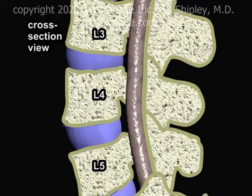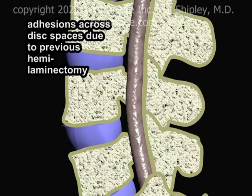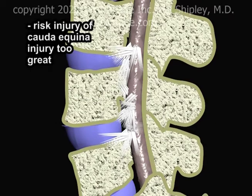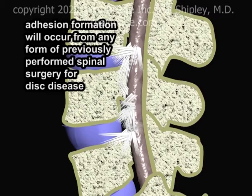As mentioned in Part 3 of this series, the previously performed hemilaminectomy causes adhesions to form between the cauda equina and the disc spaces. The scarring makes it both difficult and dangerous to use a posterior approach when performing spinal surgery to treat multilevel degenerative disc disease. The surgeon's ability to see the cauda equina clearly and keep it out of harm's way is significantly impaired and the risk of neurological injury is too great. In these circumstances, the anterior spinal approach is much preferred for the placement of interbody devices. This type of adhesion formation in and around the spinal canal commonly occurs not only with laminectomy, but also with virtually any form of previously performed spinal surgery used to treat disc disease.